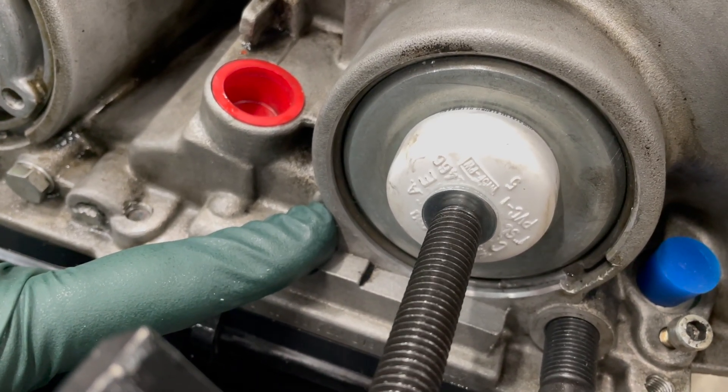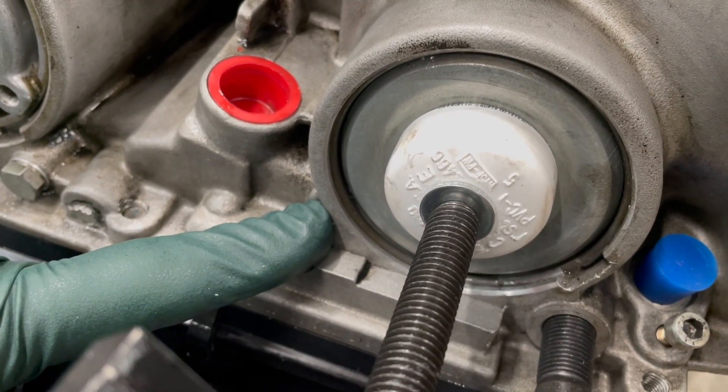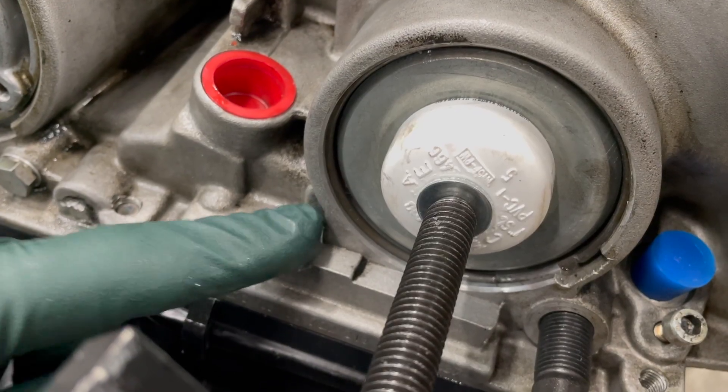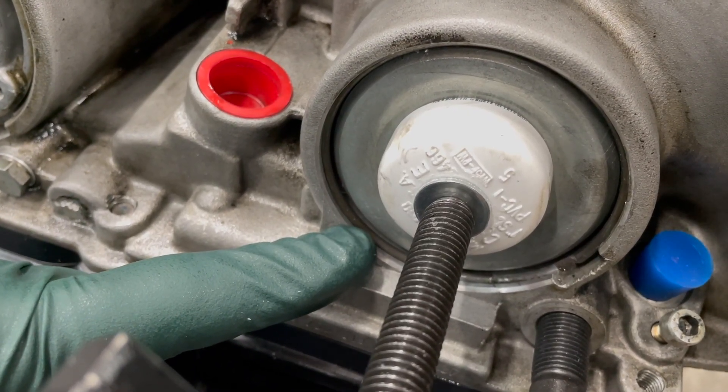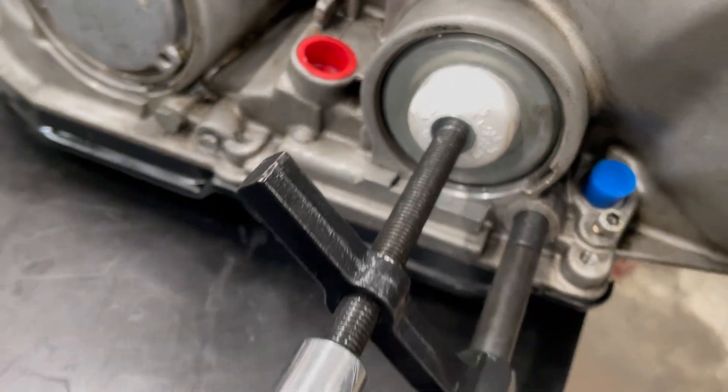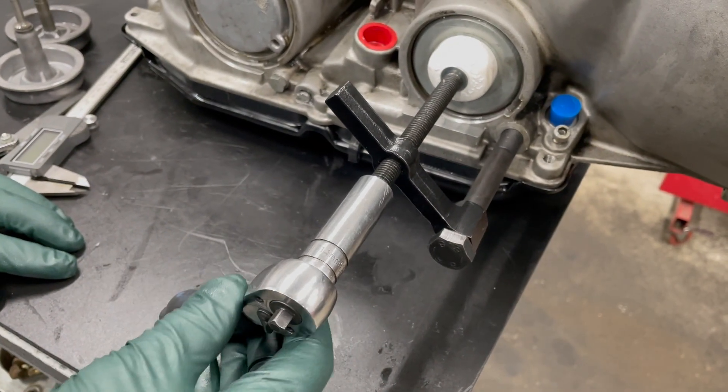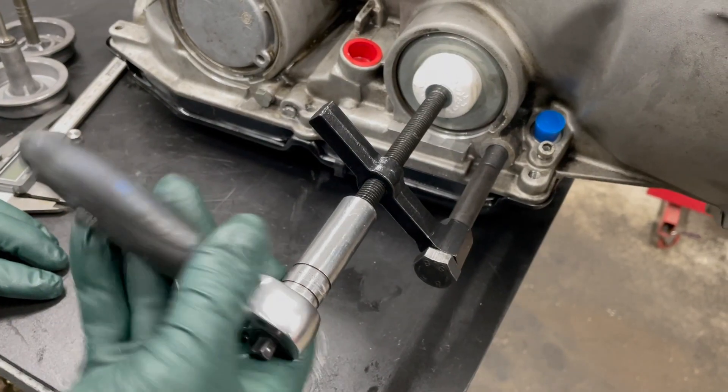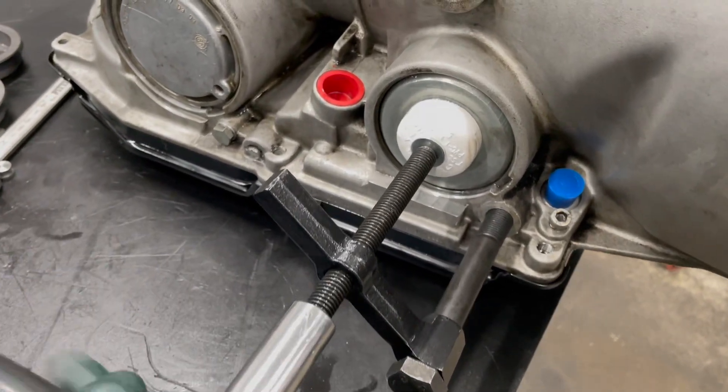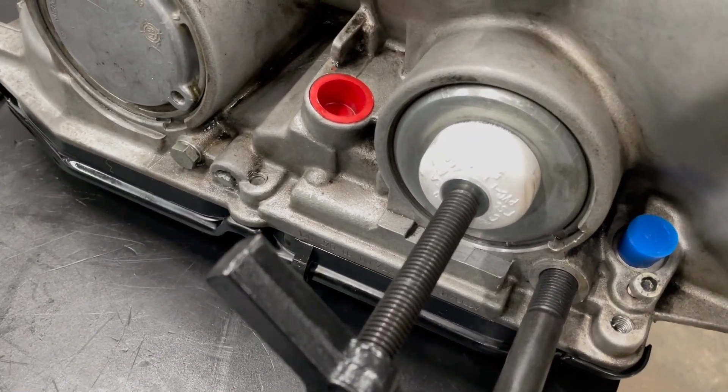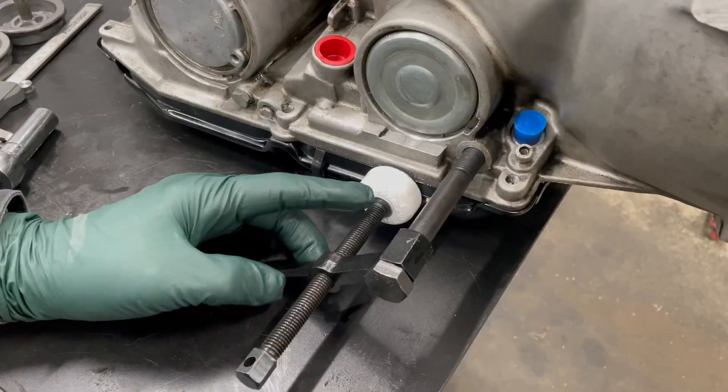Before the B1 brake band grabs hold of that drum right there, I'm just using a little bit of torque with a small ratchet. You can see you don't want to be using a big ratchet when you do this because you've got to kind of feel it.